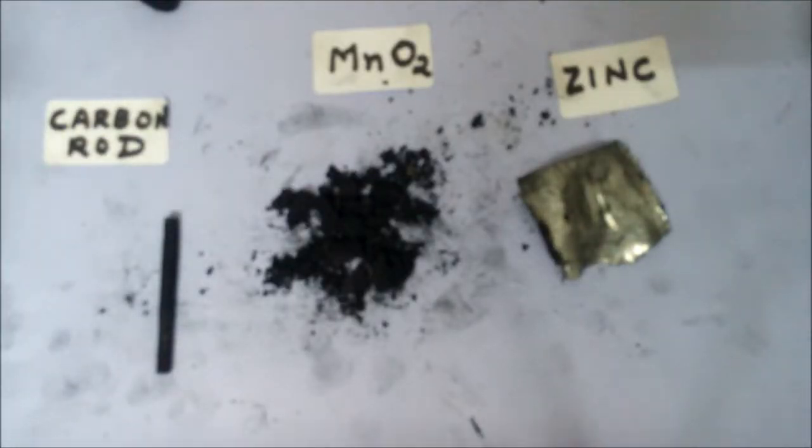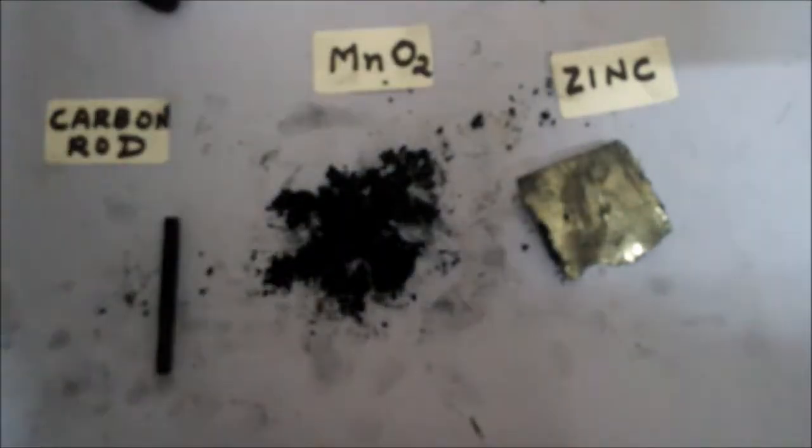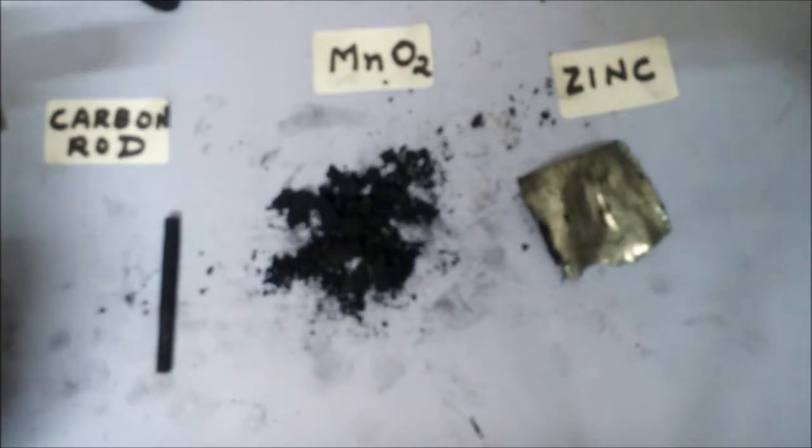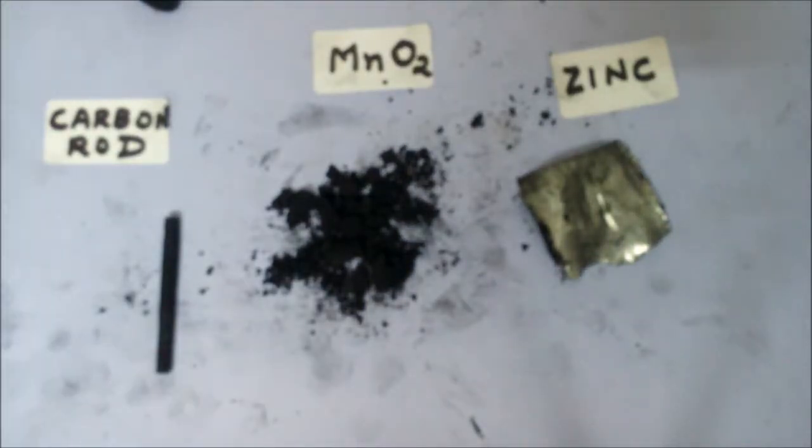Do remember the thing I told in the beginning: always use a cell which is suitable. If a cell is getting hot, do not use it. Abandon the process there itself. Always use a used up cell that is easier to break. Thank you for watching this video. Keep watching Curiosity Catalyst videos, keep liking, subscribing, and sharing, and keep experimenting. Thank you.